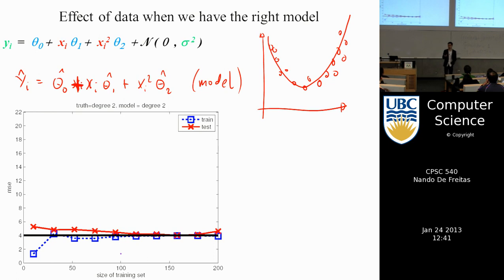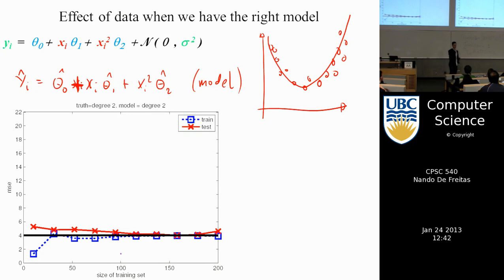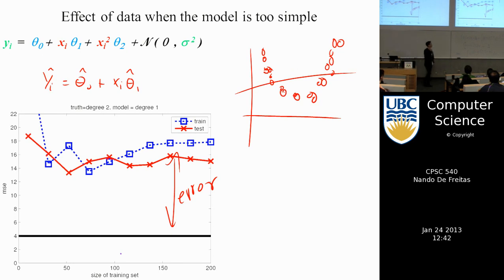The experiment — actually run by Kevin Murphy, author of the book I recommend — increased the size of the training set. As you increase the training set, both the training error and the test error converge to the optimal error. We'll always make some error because a quadratic can't fit all points perfectly due to noise. If you have the right model, learning happens very fast.